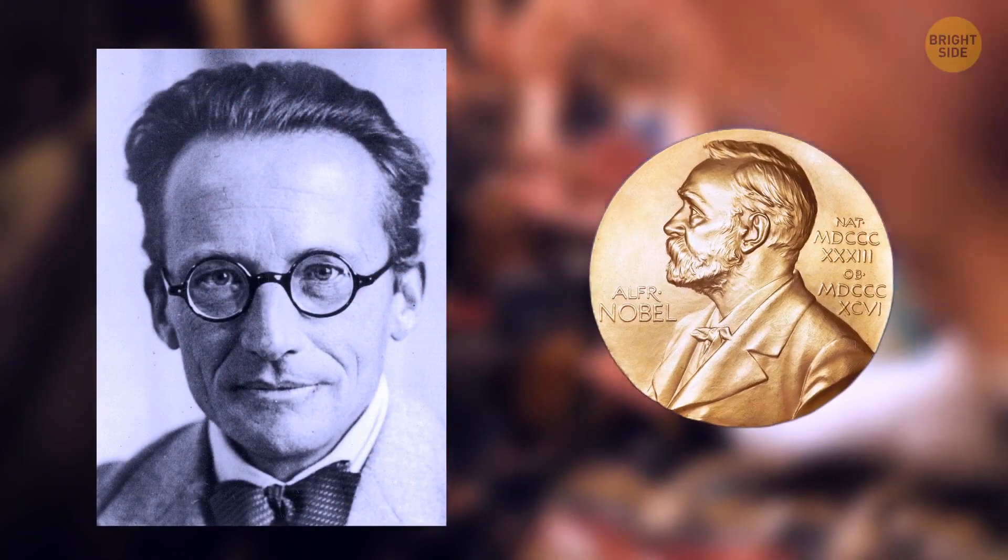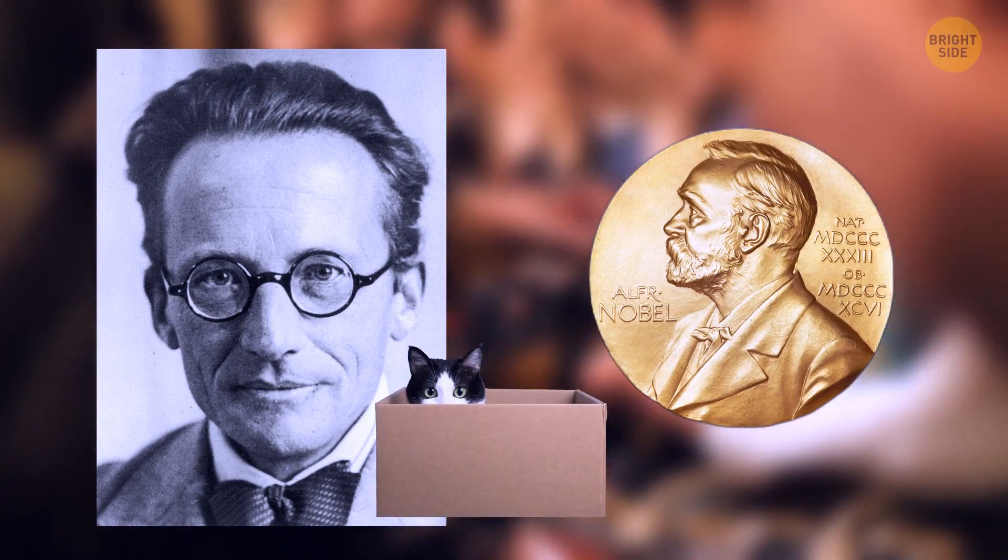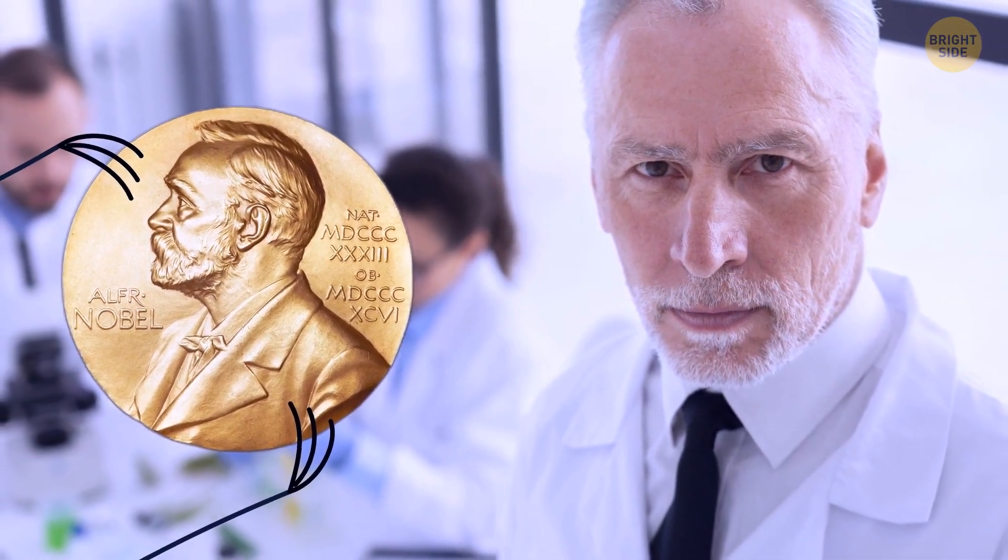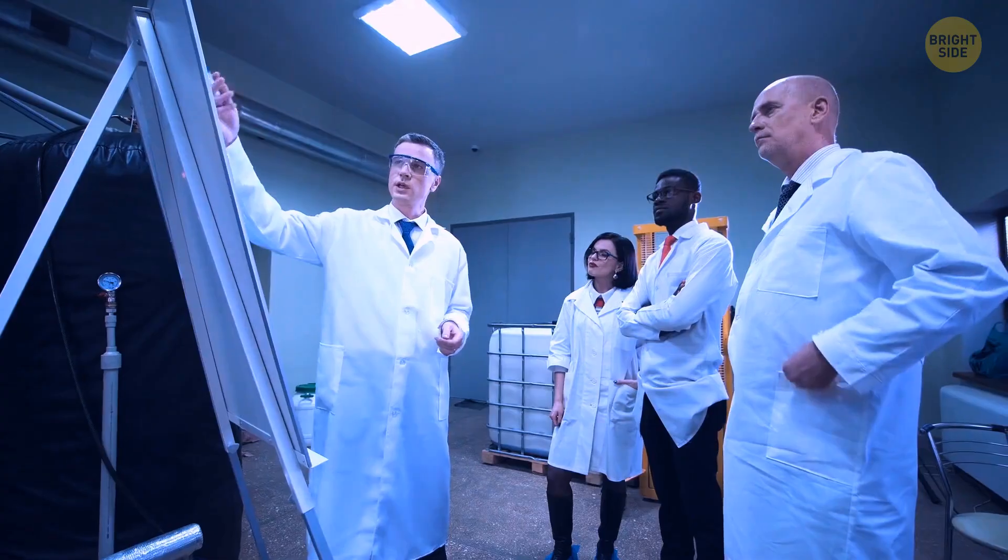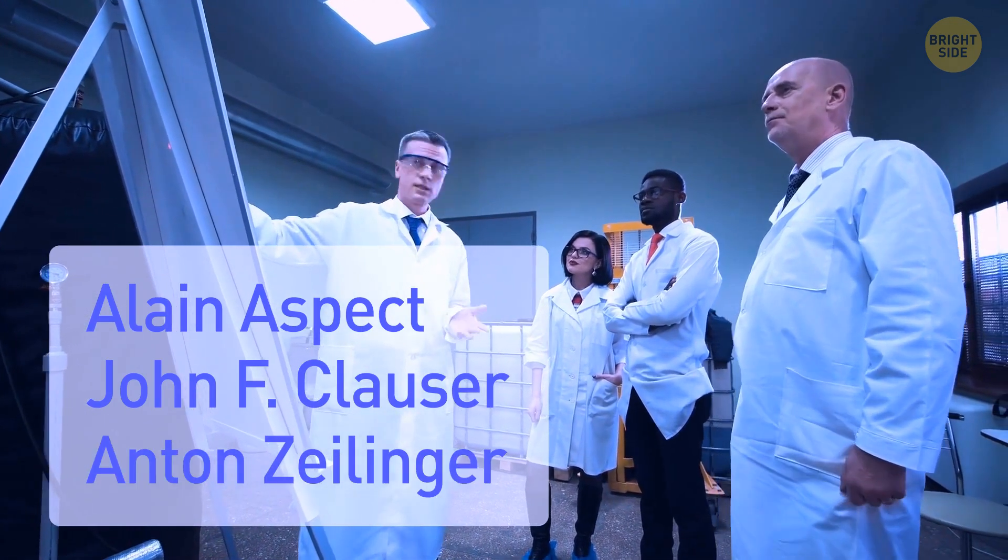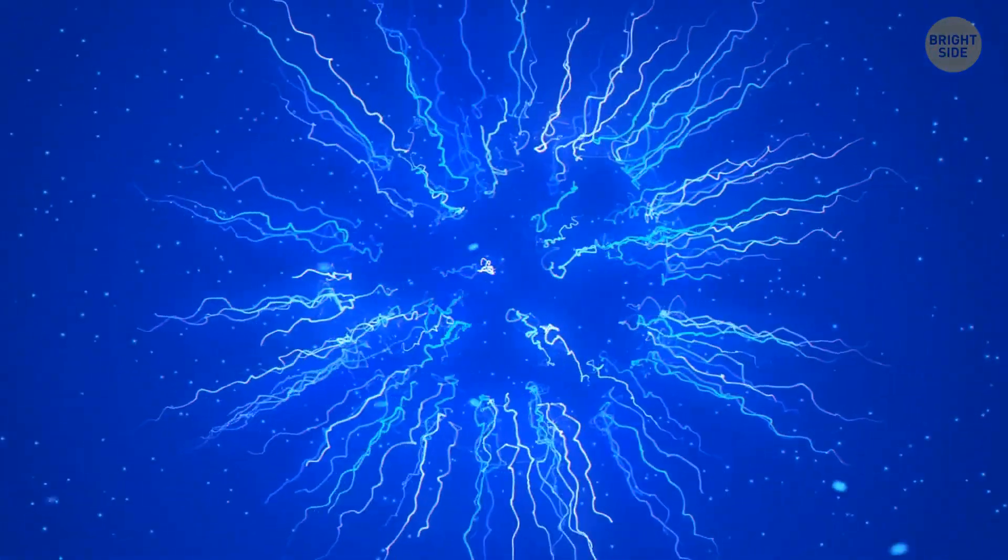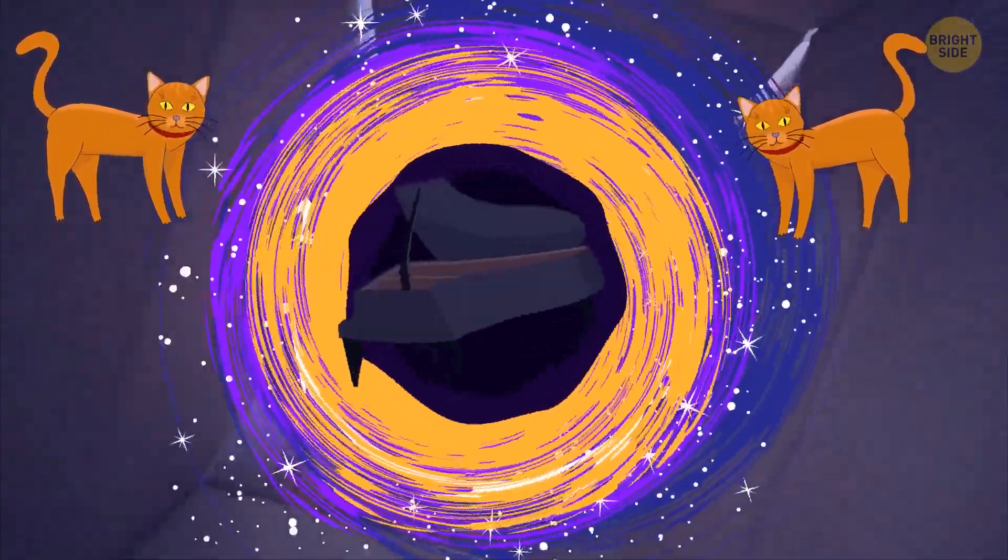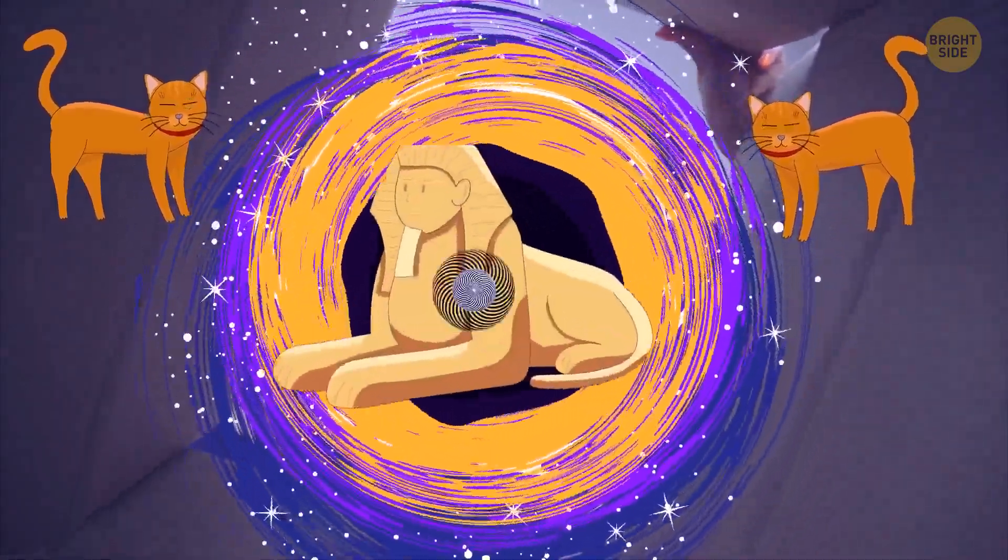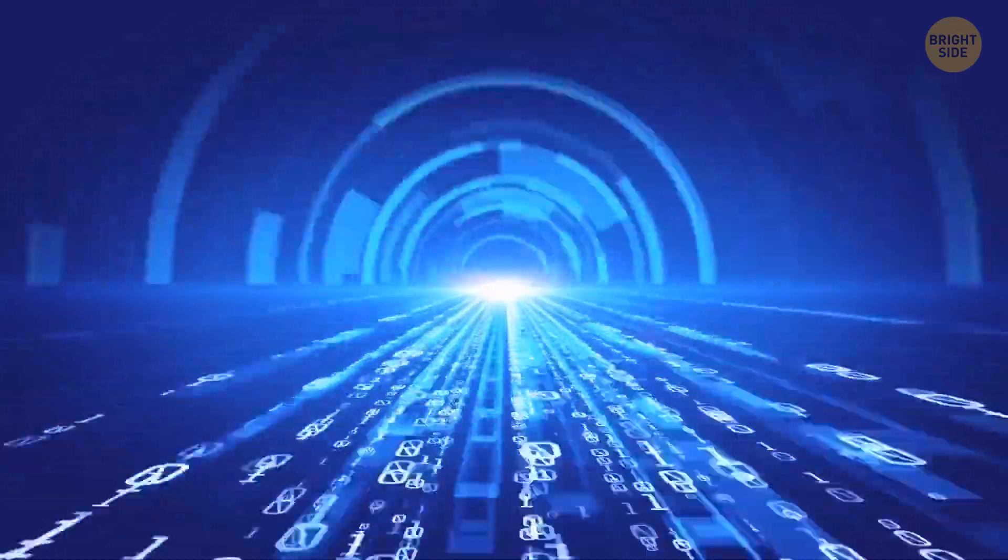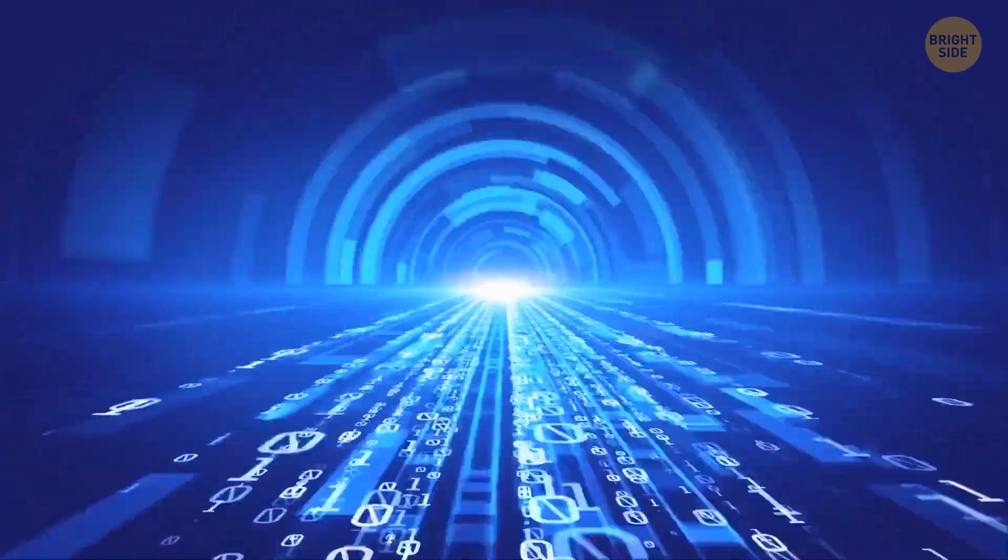Schrödinger received the Nobel Prize in 1933, even though it wasn't for this discovery. And in 2022, three more scientists received the Nobel Prize for another discovery in this field. These scientists were Alan Aspect, John F. Clauser, and Anton Zeilinger. They got it for their experiments that involved entangled quantum states. What does all this tell us? Guess now we'll have to look for explanations in some kind of quantum mechanical magic. Unfortunately, humanity isn't developed well enough to test any of these theories yet.